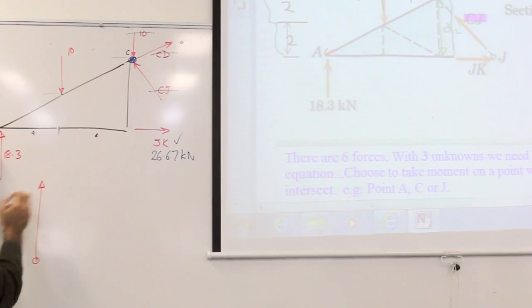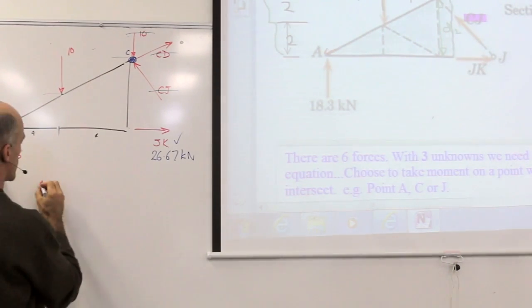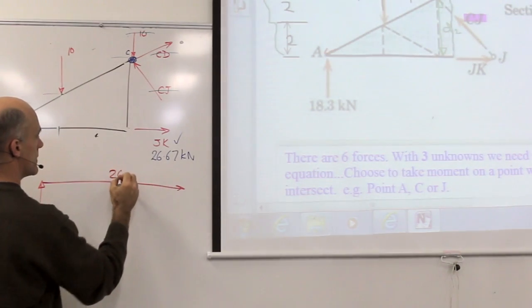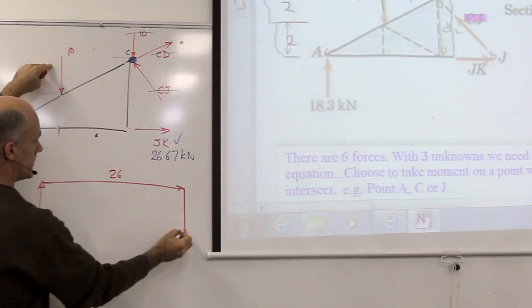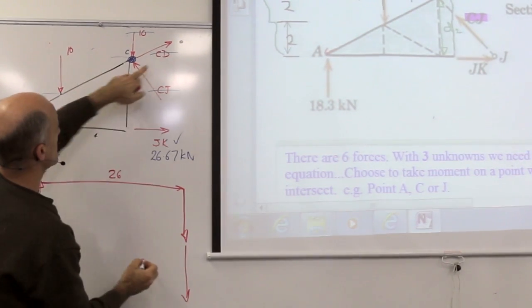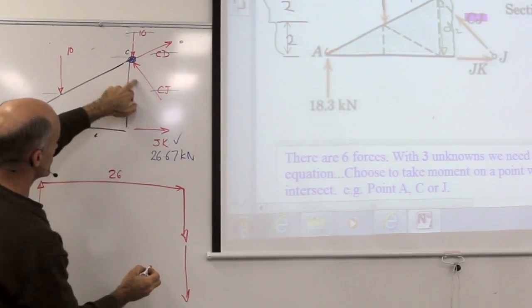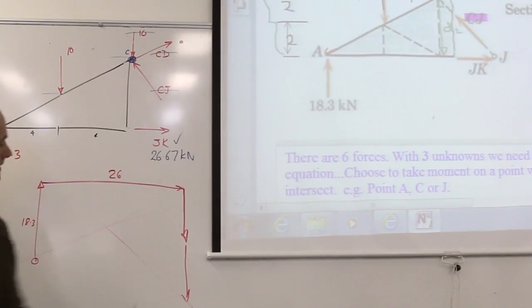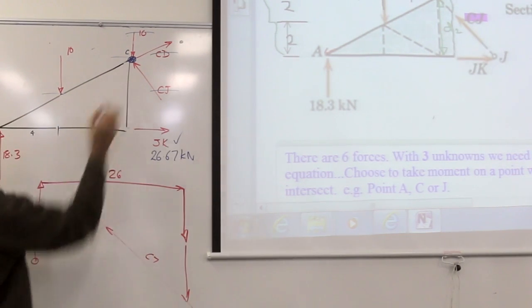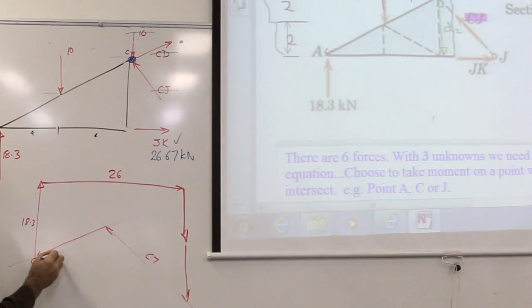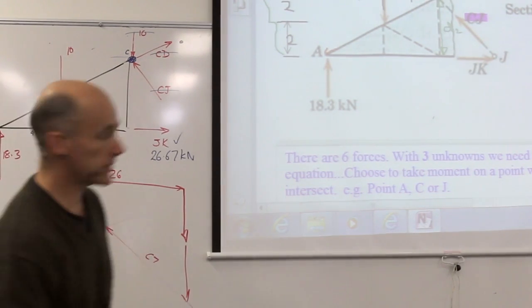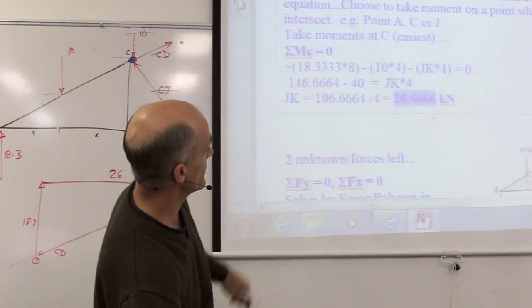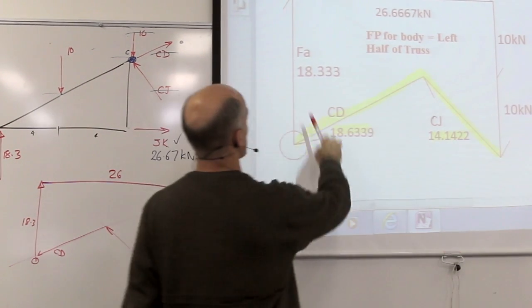Starting here, we go up 18, that's this one here. 18.3, we've got JK across here, 26. We've got 10 down, another 10. We've got CJ, which is at 45 degrees, and this one which is some other angle. And that solves our force polygon, CJ here, and CD here. Now it looks like CD is going the other way. It doesn't go that way, it's actually pushing the other direction. And that force polygon will solve all of the members that we've cut. So when we put the numbers in,